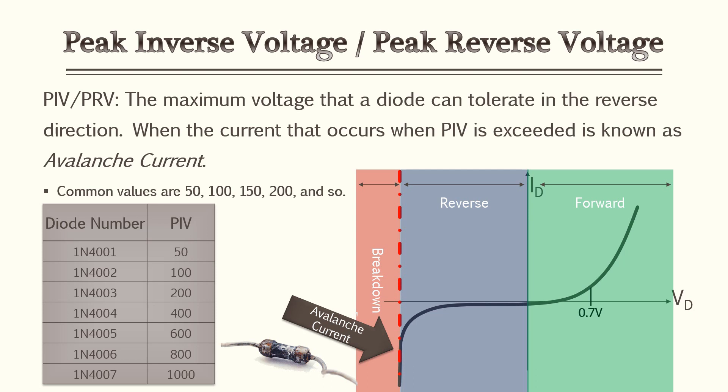Now we'll address the breakdown area of a diode. The maximum voltage a diode can tolerate in the reverse-current direction is known as the peak inverse voltage or the peak reverse voltage — they mean the exact same thing on questions or data sheets. Whenever the peak inverse voltage is exceeded, it creates an avalanche current. The red area in the illustration below shows the peak reverse voltage region where avalanche current is created, almost like burning up the diode.